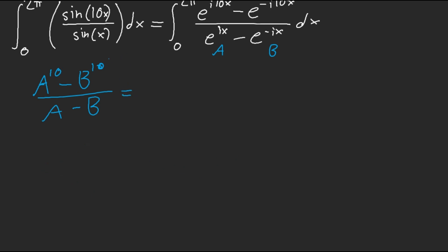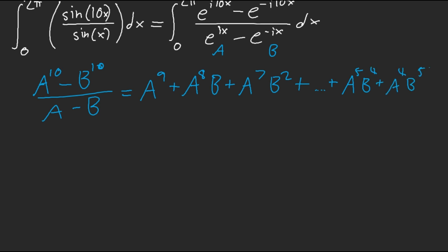Simplifying A^10 minus B^10 over A minus B gives us A^9 plus A^8·B plus A^7·B^2, plus dot dot dot. We need to find the middle term. Going through the powers: 9,0; 8,1; 7,2; 6,3; 5,4 — and then it mirrors back to 4,5 and continues up to B^9. That's what we have.